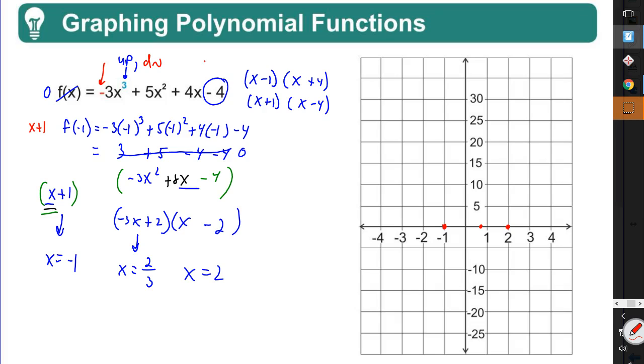Now I can also do my y-intercept, which means set all the x values equal to 0 and that would be negative 4. So right about in there. I've got all those points. All I need is an xy chart now to finish off. I'm going to go one value to the left of my leftmost zero. And so I'm going to do negative 2.